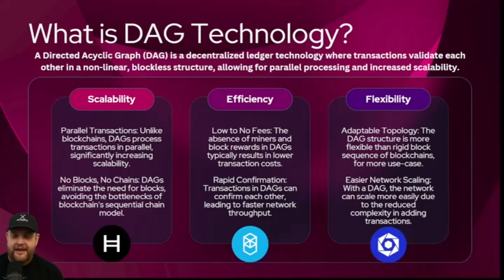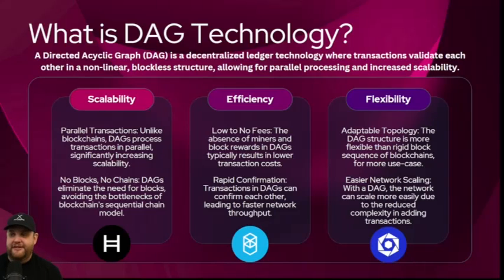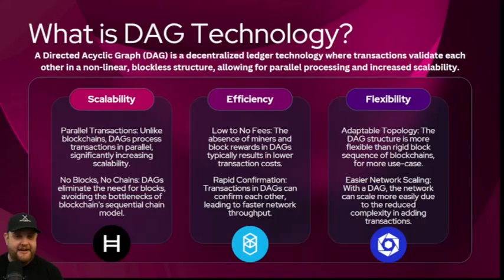Rather than having to confirm the block, you basically just confirm other transactions. DAGs are adaptable technology — not rigid inside of a block like a blockchain. The DAG structure is more flexible than rigid block sequencers. With a DAG network, the network can scale more easily due to the reduced complexity of adding transactions without having to pile them all in and wait for the block to verify.